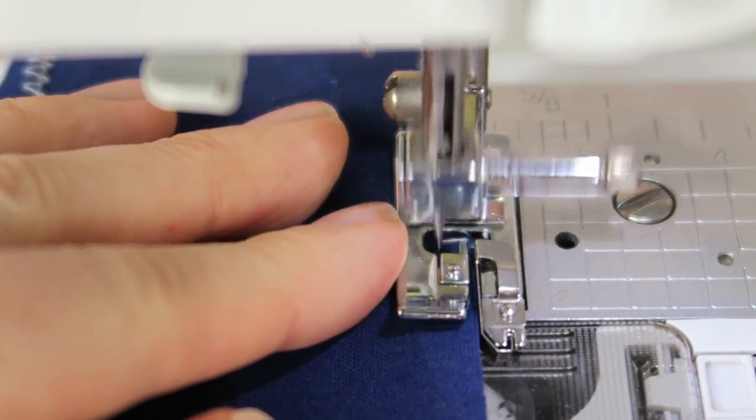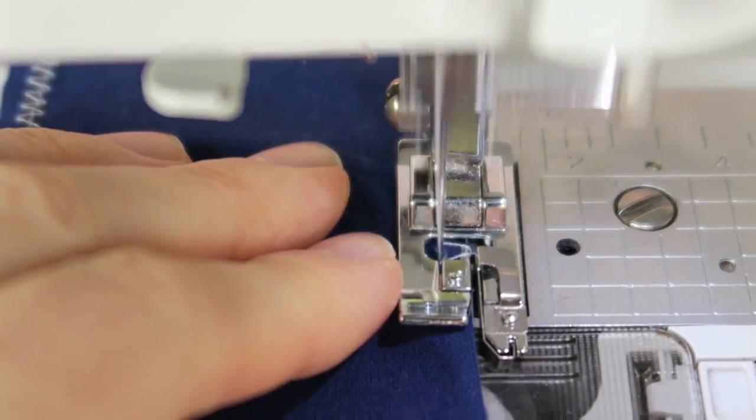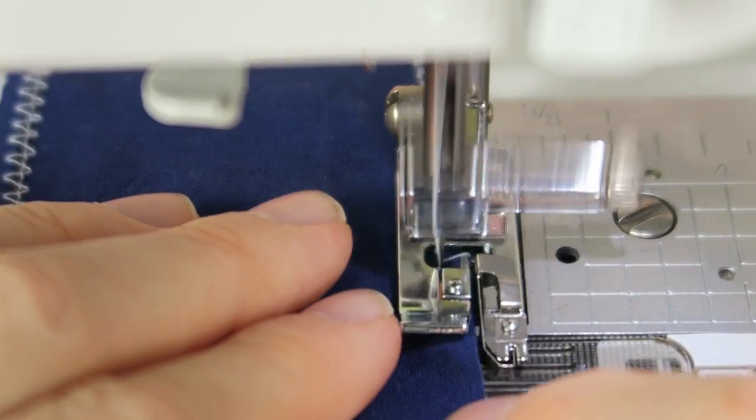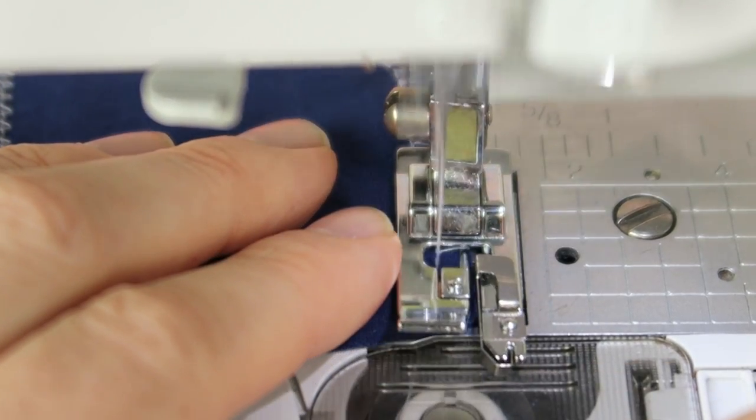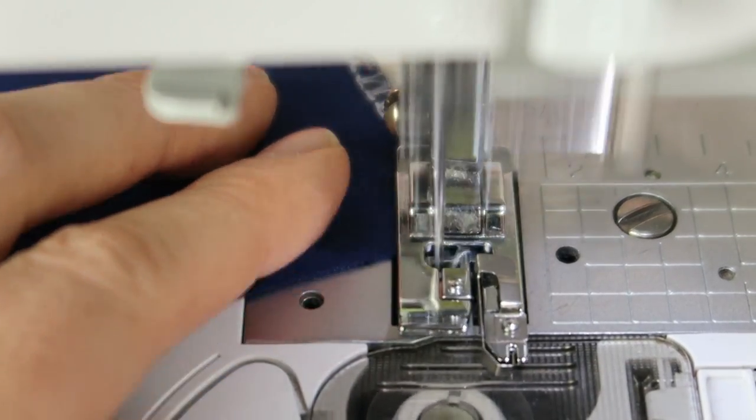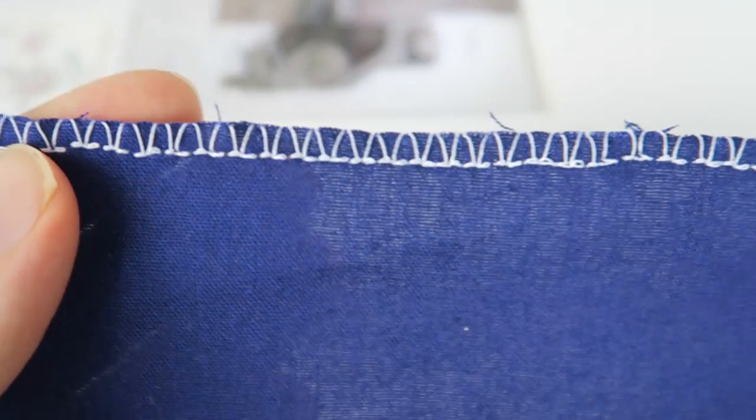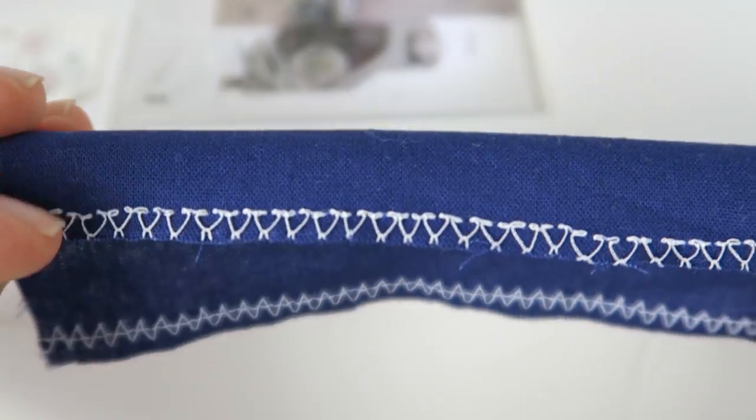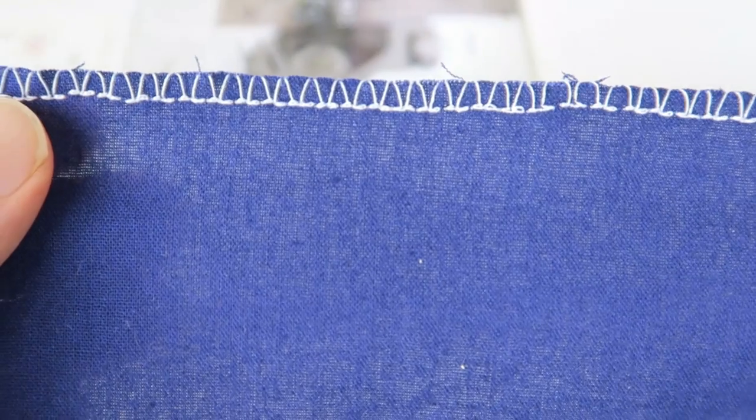I hope you can see this a little bit better when I'm zooming in like this. You can see how the thread is feeding over this little bit in the back to make sure that you get a nice overcasting stitch. And this is what it looks like. Almost looks like a serger, doesn't it?